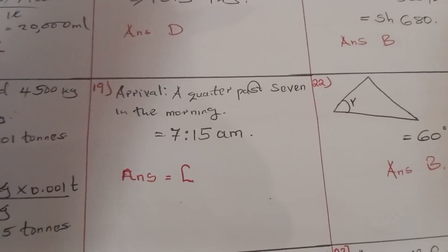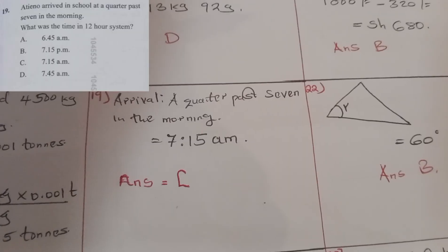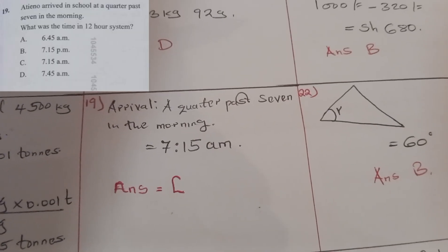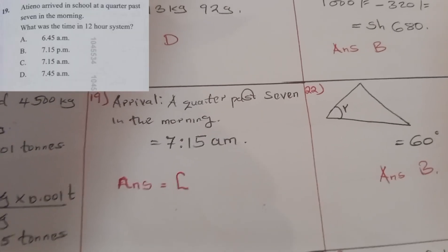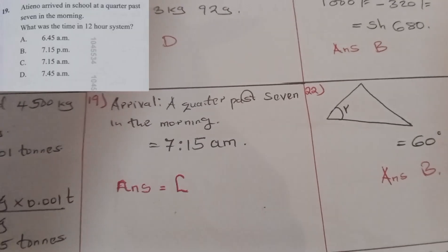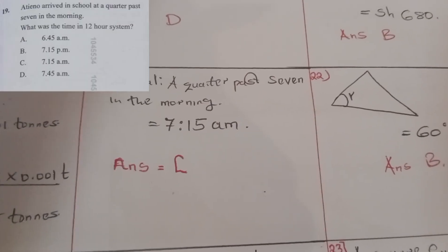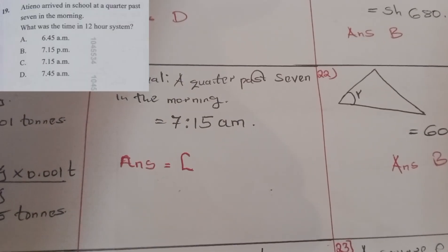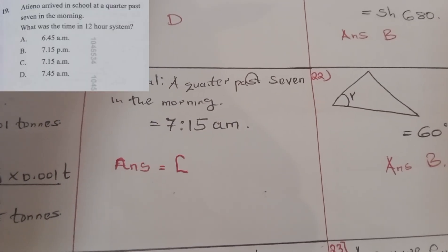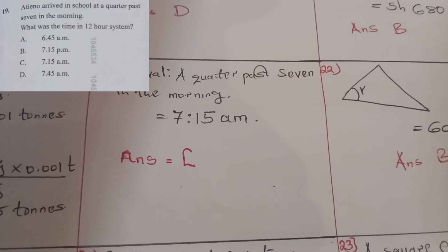Question nineteen: a learner arrived in school at a quarter past seven in the morning. What was the time in the 12-hour system? A quarter past 7 is 7:15 a.m. The correct answer was C.